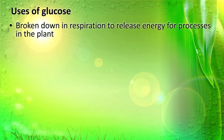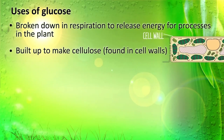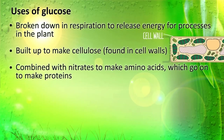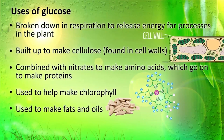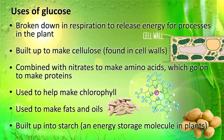Glucose can be broken down in respiration to release energy for processes in the plant. It can be built up to make cellulose, which is found in cell walls. It can be combined with nitrates from the soil to make amino acids, which go on to make proteins. It can also be used to help make chlorophyll and fats and oils. And finally, it can be built up into starch, which is an energy storage molecule in plants.